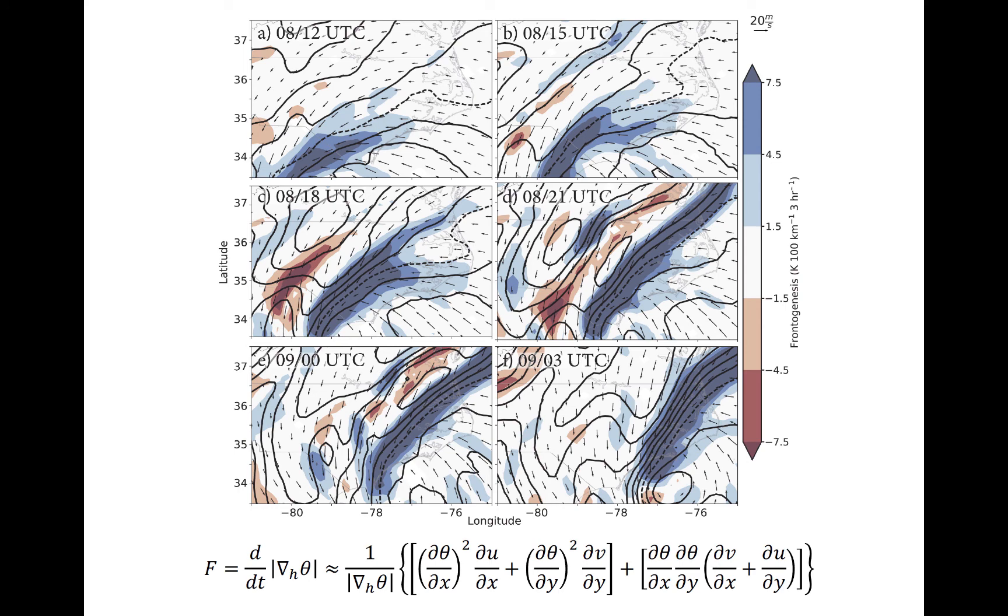We can zoom in on eastern North Carolina as Matthew approached. Plotted is frontogenesis at 900 millibars. The equation for frontogenesis is shown at the bottom. The frontogenesis is affected by deformation and divergence, but primarily by deformation.